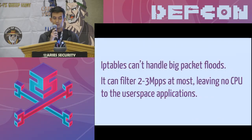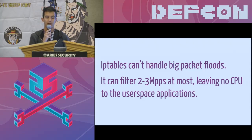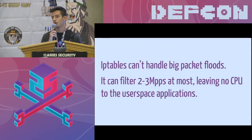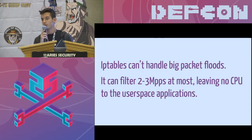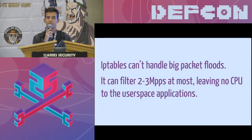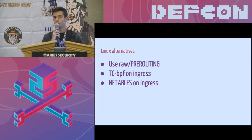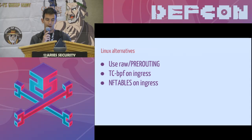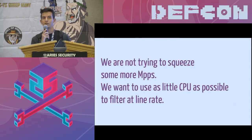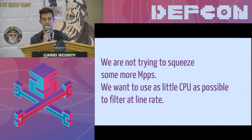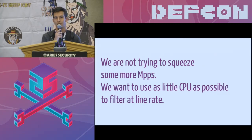This works great, but there is a problem. With IP tables we can't handle big packet floods. Last time we checked, we could do about two to three million packets per second on a single box, leaving no CPU at all to user space applications. This is a problem for us because on our network each server which serves HTTP and DNS traffic also participates in DDoS mitigation. We can't afford to spend a whole box just mitigating DDoS attacks. We are not just trying to squeeze some more million packets per second of DDoS mitigation capacity — we'd like a solution that uses as little CPU as possible to filter packets at line rate.